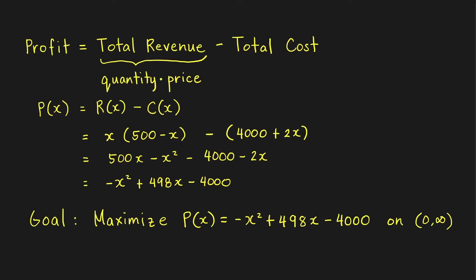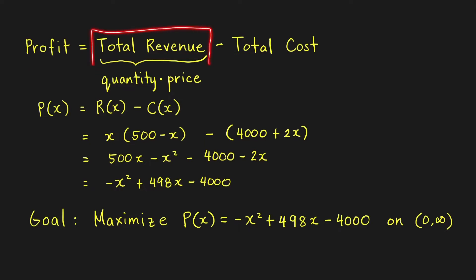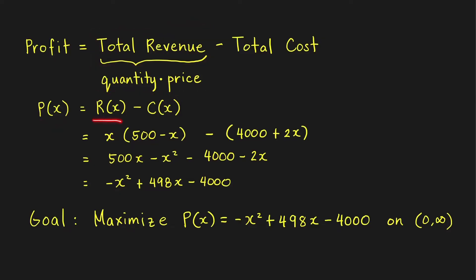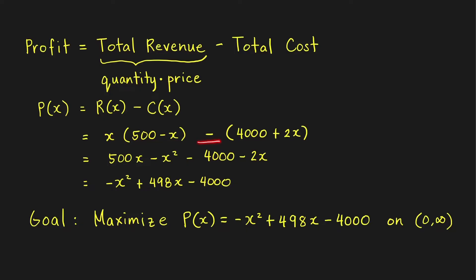Take note that profit equals total revenue minus total cost. Total revenue is obtained by multiplying the quantity demanded times price per unit. If we denote our total profit function as P(X), total revenue function as R(X), and total cost function as C(X), then P(X) = R(X) minus C(X). Since X is the number of units produced and sold, revenue equals X units times the price per unit, which is 500 minus X, minus the total cost function, which is 4,000 plus 2X.